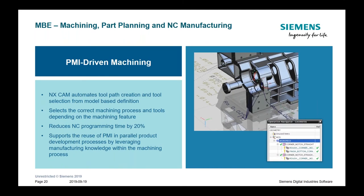Looking at machining, part planning, and manufacturing — the NX CAM solution by Siemens also provides support for PMI-driven machining. PMI-driven machining automates tool path creation and tool selection to reduce NC programming by up to 20% — and we're actually seeing more than that, depending on the complexity and types of models you're working with. The reuse of NX PMI dimensions and annotation in these downstream applications really leverages manufacturing knowledge within the machining process.